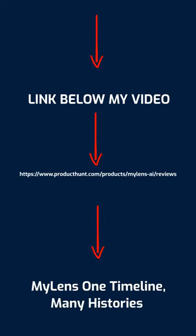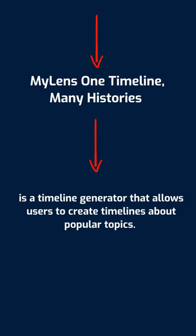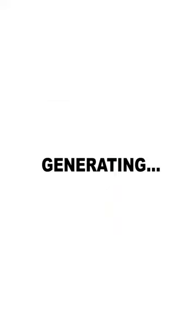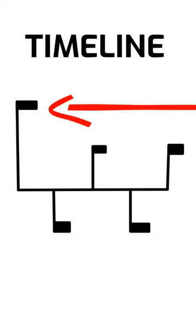But what is MyLens? MyLens — one timeline, many histories — is a timeline generator that allows users to create timelines about popular topics. It's really easy to use: just write down what you need. Generating takes about a few seconds and you will get your timeline with 4 or 5 important events and a short description.